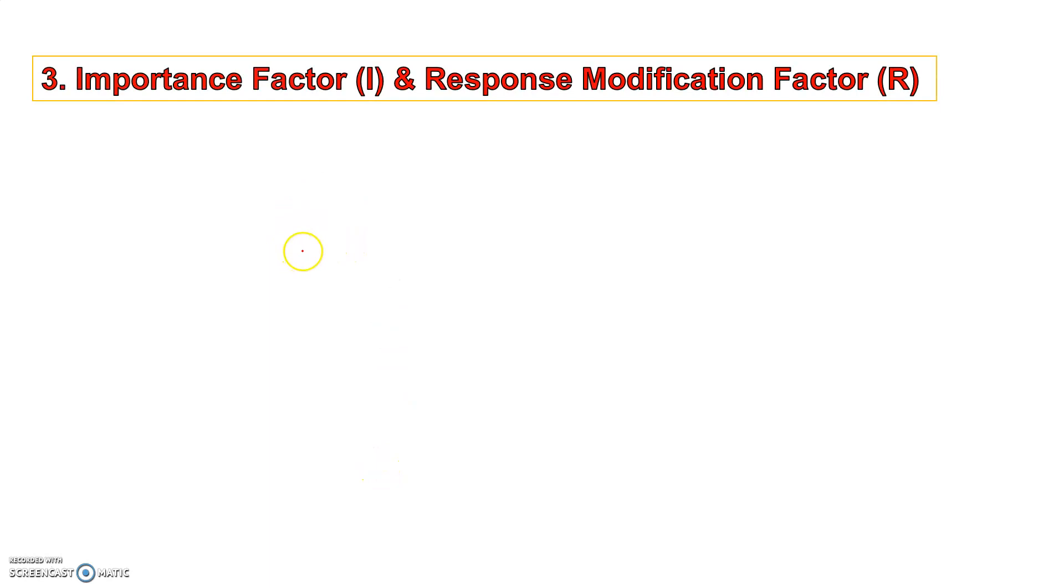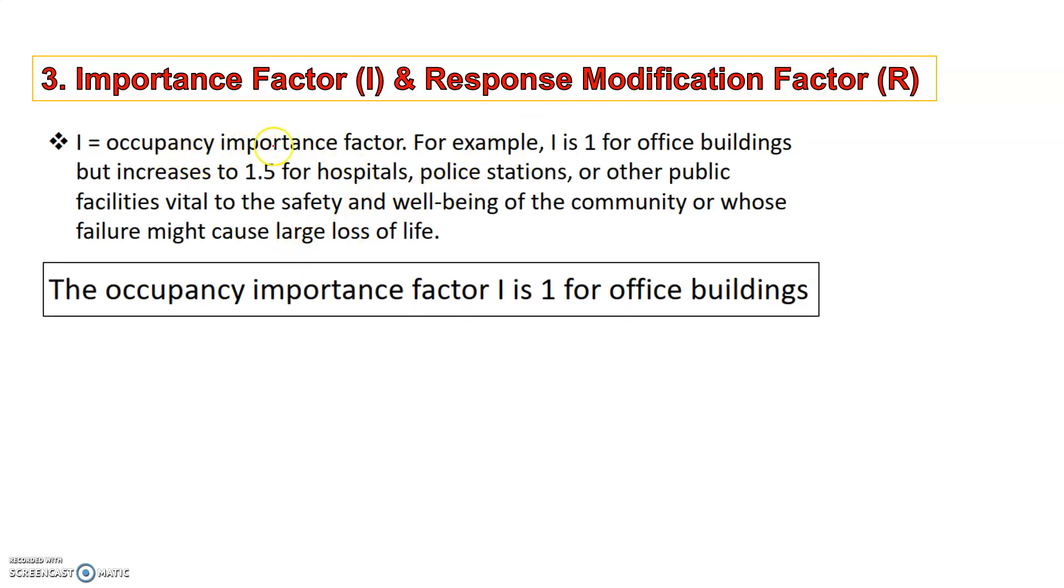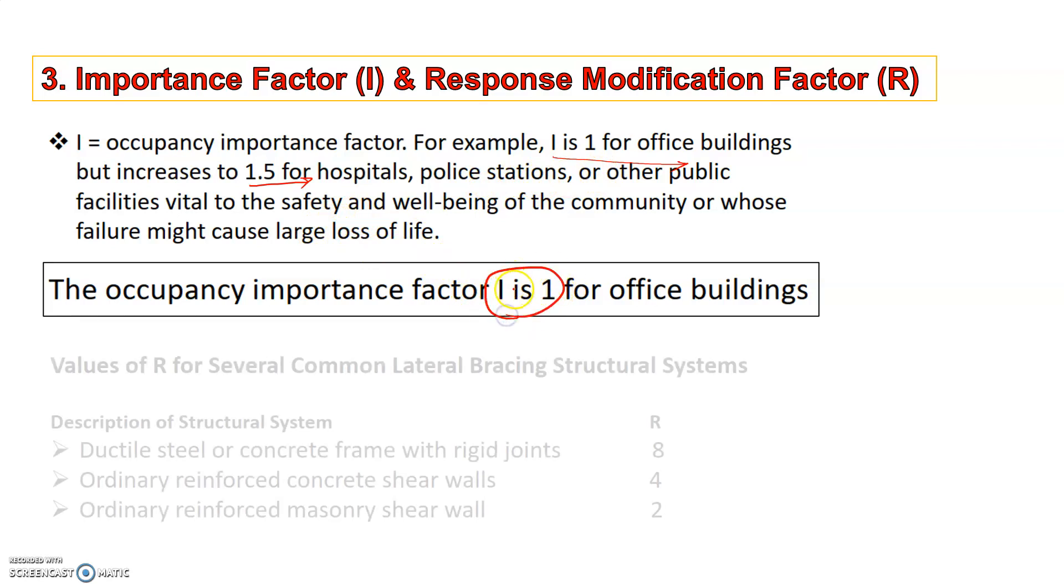The next most important thing that we need to calculate are the importance factors and the response modification factor R. I is occupancy importance factor, this is 1 for office buildings while a higher value for more critical structures like hospitals, police stations and public safety and public facilities. For the current problem the value of I is 1.